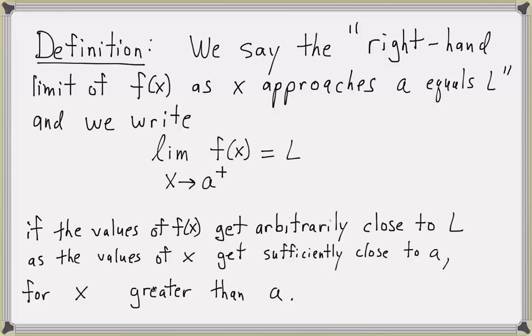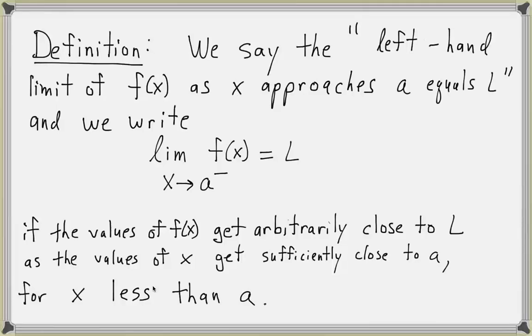The left-hand limit of f is defined similarly. We say the left-hand limit of f of x as x approaches a equals l, and write the limit notation with a minus sign to the upper right of a. We can also read this as: the limit of f as x approaches a from the left equals l, if the values of f are getting closer and closer to l as x gets closer and closer to a, but only when we consider x's slightly less than a — that is, to the left of a.